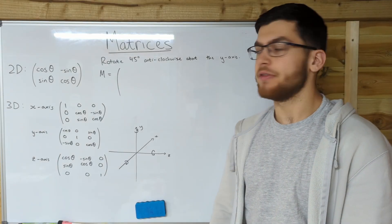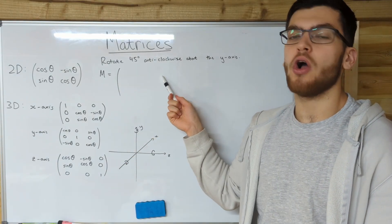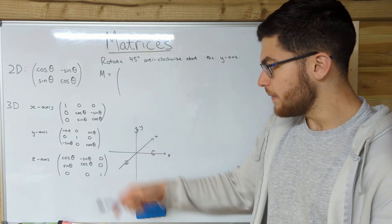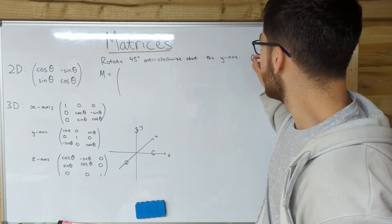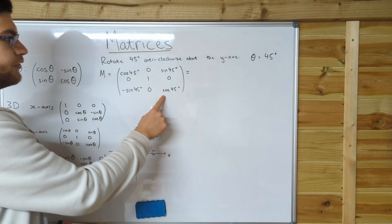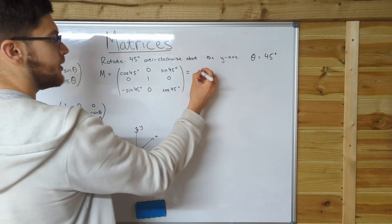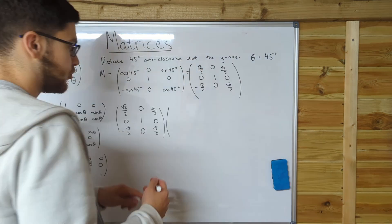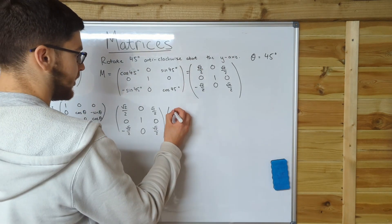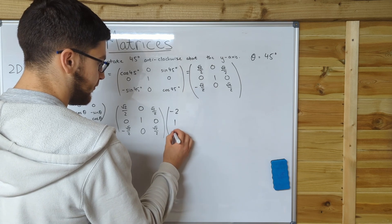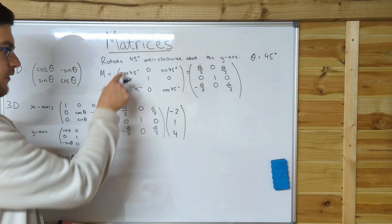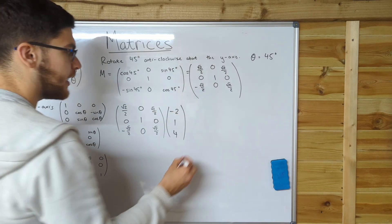Let's say we want to rotate everything 45 degrees anticlockwise about the y-axis. So the matrix that we're using is this one here. I'm going to put in theta equals 45 degrees. So that's what our matrix looks like. And then when we evaluate everything, we get root 2 over 2. So just like last time, we're going to multiply this by a column vector. Let's pick a random number, minus 2, 1, 4. And this point here is going to be rotated 45 degrees anticlockwise about the y-axis.